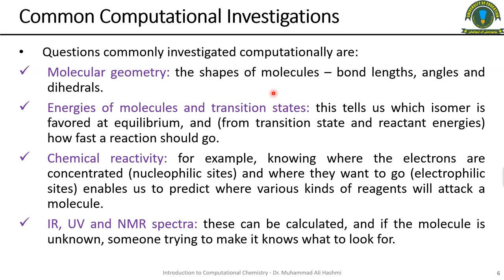Normally you can study these properties through experimental chemistry — for example, you can study the NMR of a compound, or use X-ray crystallography to determine bond lengths, bond angles, and dihedral angles. We can also determine these things from computational chemistry.